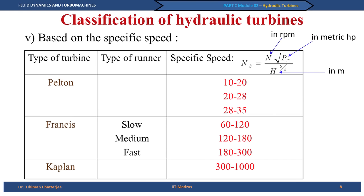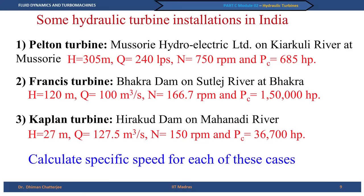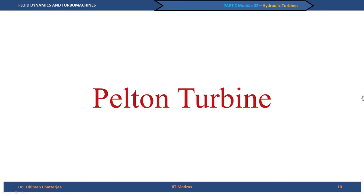You may ask: what is wrong with using a Pelton turbine at a specific speed in the range of 120 to 180? The reason is that you will not get the best efficiency. We are talking about using a particular type of turbine where the efficiency should be highest. For example, Pelton turbines are seen in the Missouri hydroelectric power plant, Francis turbines in the Bhakra dam, and Kaplan turbines in the Hirakud dam in India.